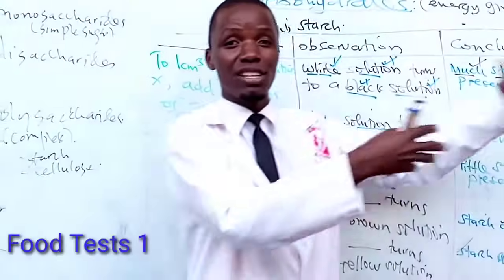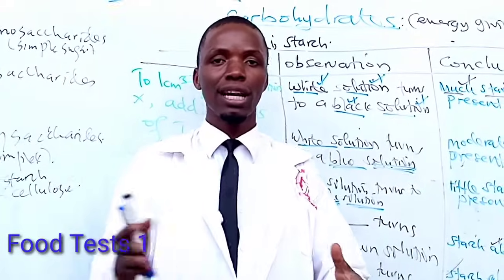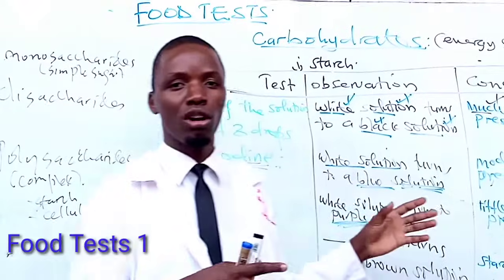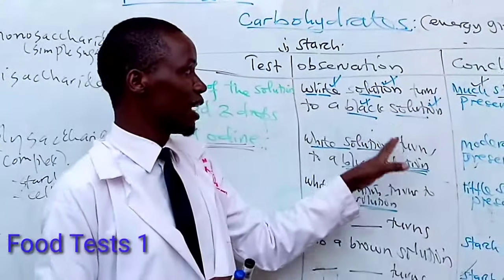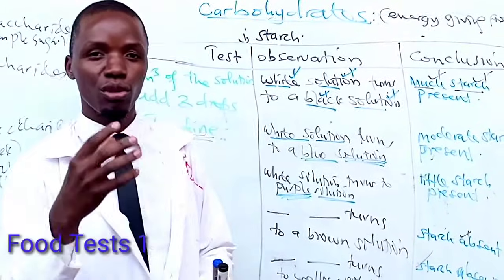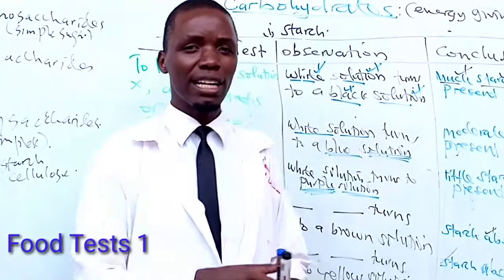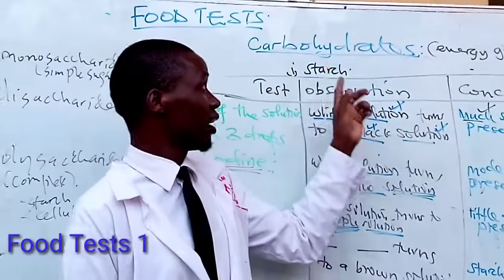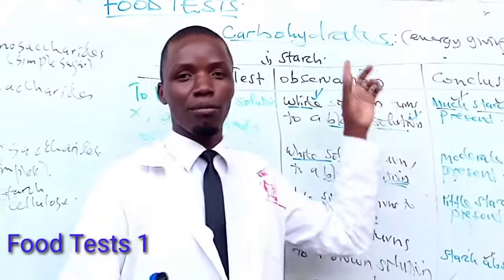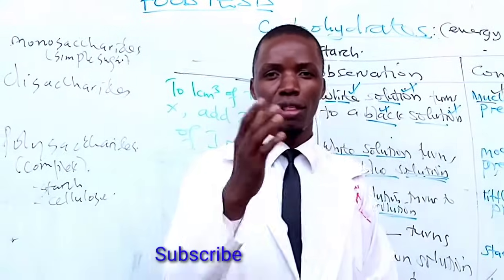As we continue looking at other sugars, we are going to learn more skills of how to observe and how to write conclusions. Make sure you check me out and subscribe if you haven't already. In the next episode, we are going to look at tests for other carbohydrates — that is, reducing sugars, non-reducing sugars, and starch. Thank you.